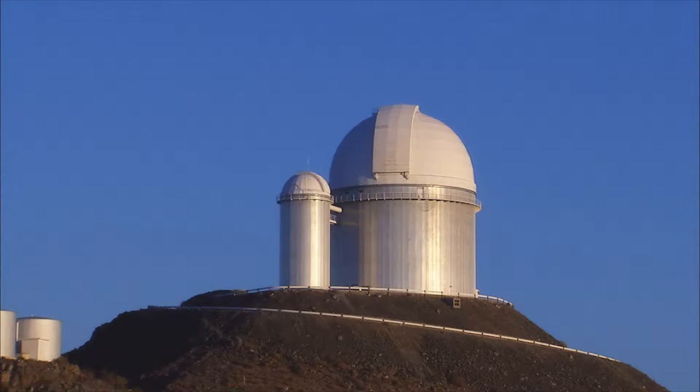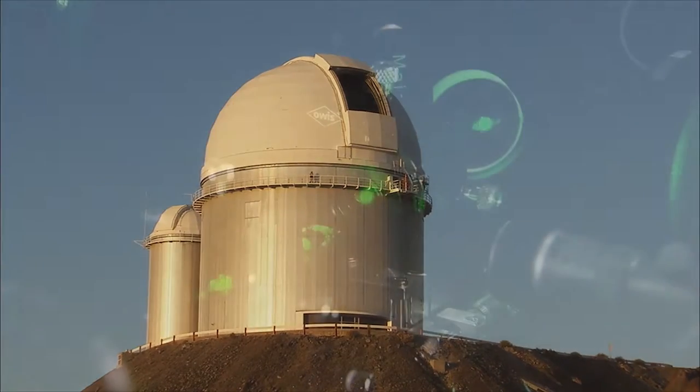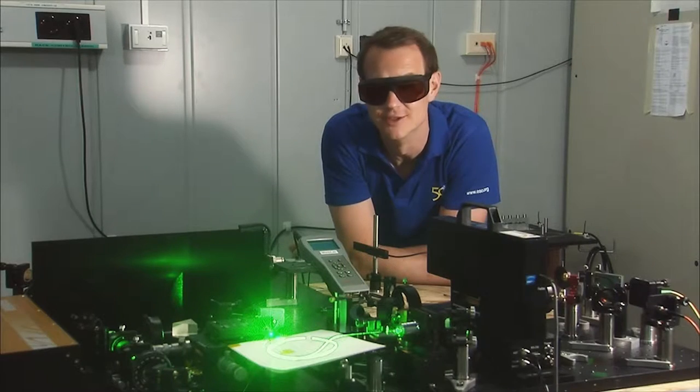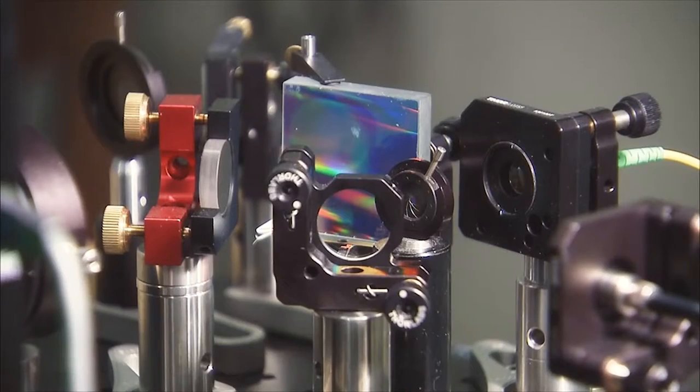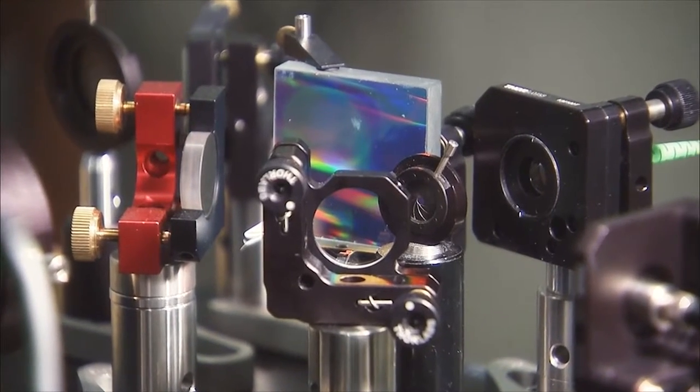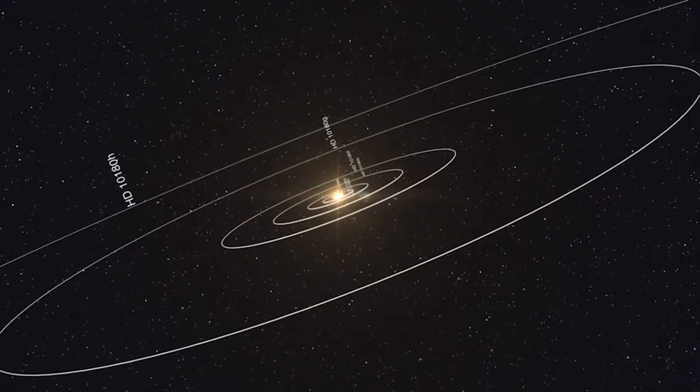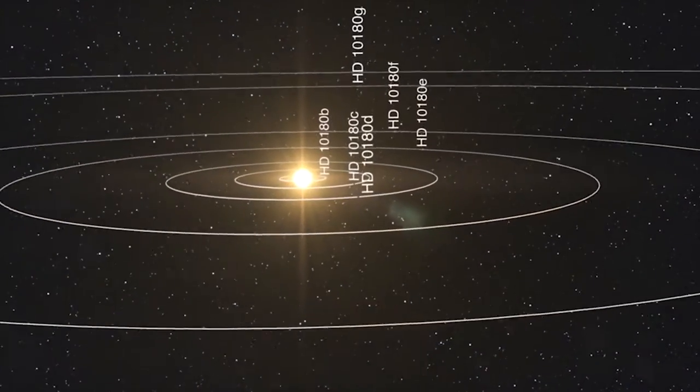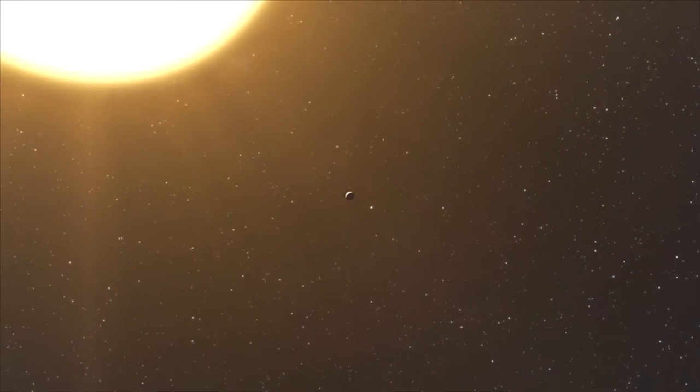ESO's venerable 3.6-metre telescope is also hunting for exoplanets. The HAARP spectrograph is the most accurate in the world. So far, it's discovered more than 150 planets. Its biggest trophy, a rich system containing at least five, and maybe as many as seven, alien worlds.